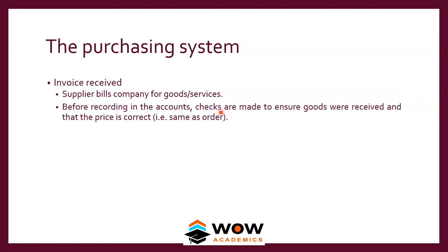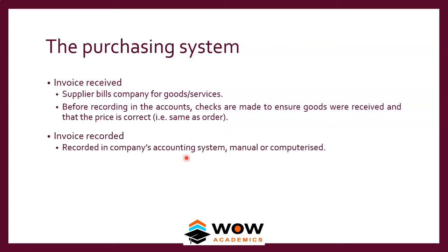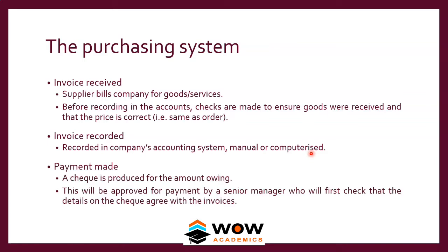Next, the invoice is received. With the goods, the supplier also sends the bill. Before recording the accounts, checks are made to ensure that goods were received and the price is correct. The warehouse manager confirms receipt of the goods to the purchase manager, who then passes the bill to the accounts department to be recorded in the company's accounting system — manual or computerized. The accounts department trusts the warehouse manager and purchase manager and will process the payment.